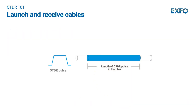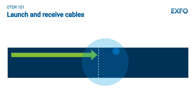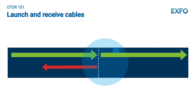The OTDR launches a pulse, and the duration of the pulse translates to a length in the fiber. A connector acts as a partial mirror, reflecting a significant amount of light back. Following the light pulse to a low-signature event such as a splice, which creates a small attenuation, the small and weaker reflection is lost in the large reflection from the connector, creating a blind spot. The green arrows represent transmitted light and red the reflected light.